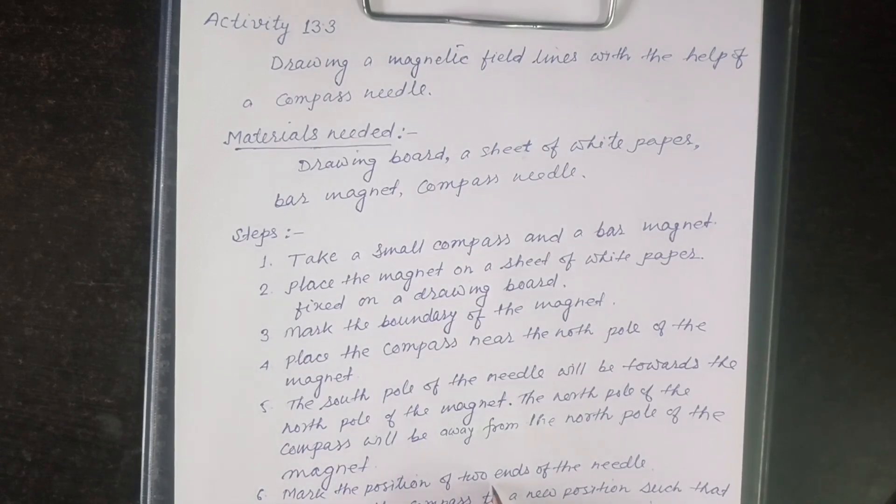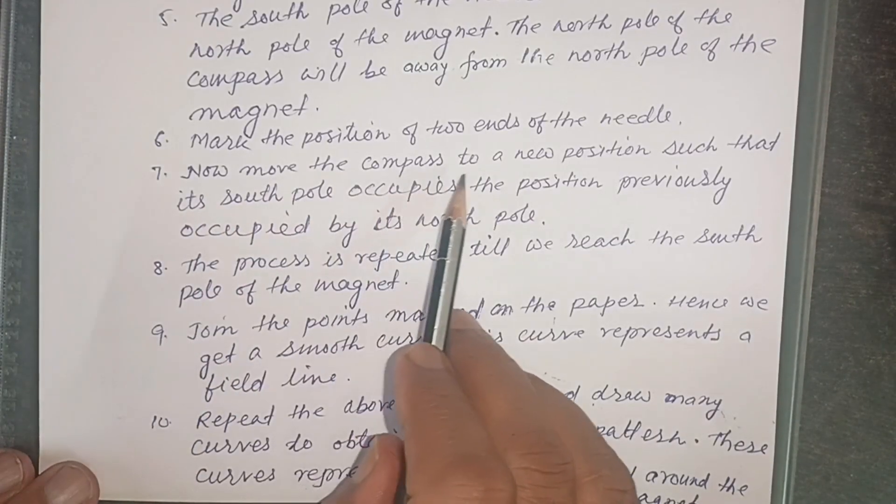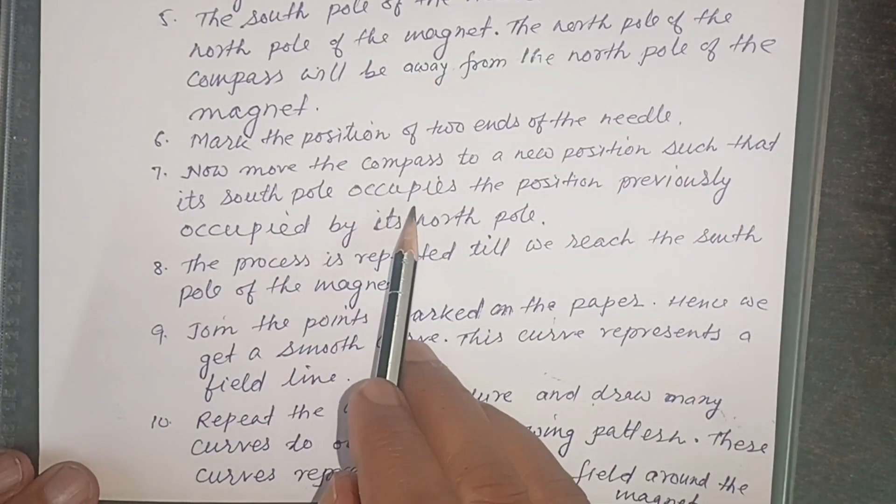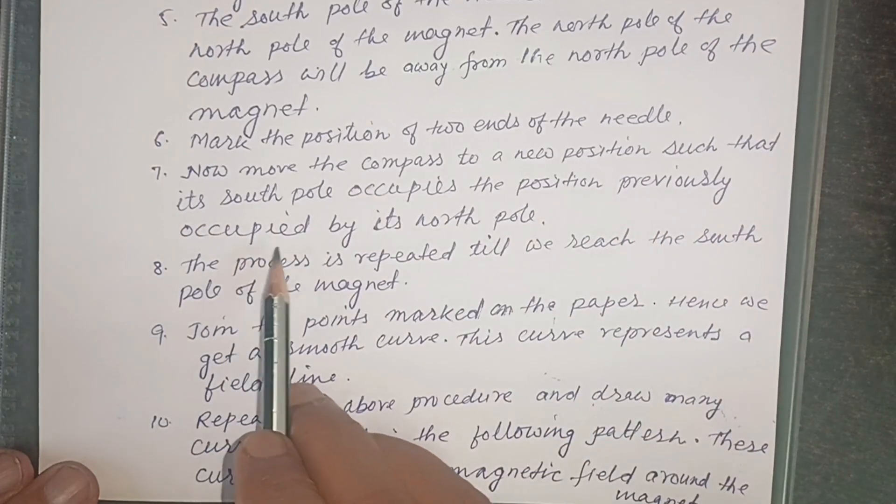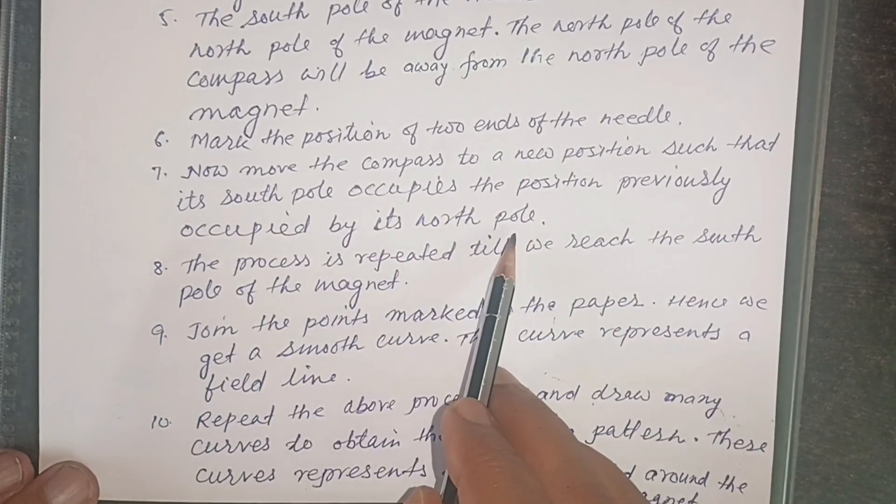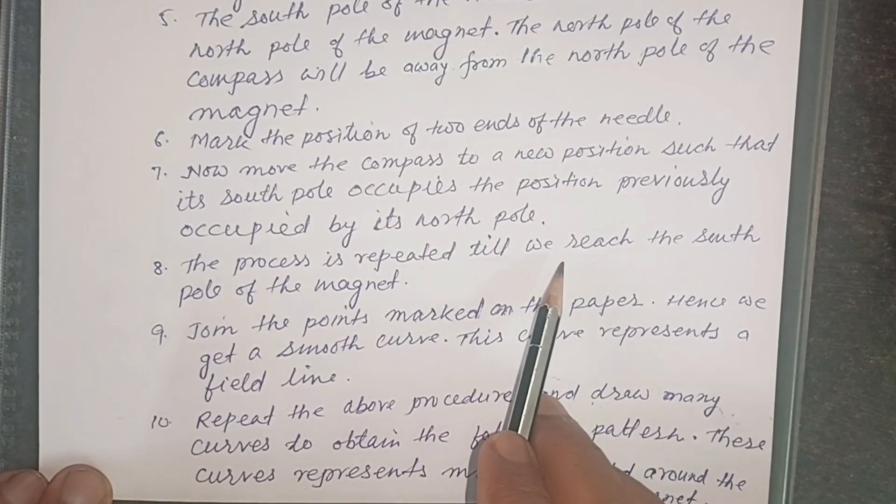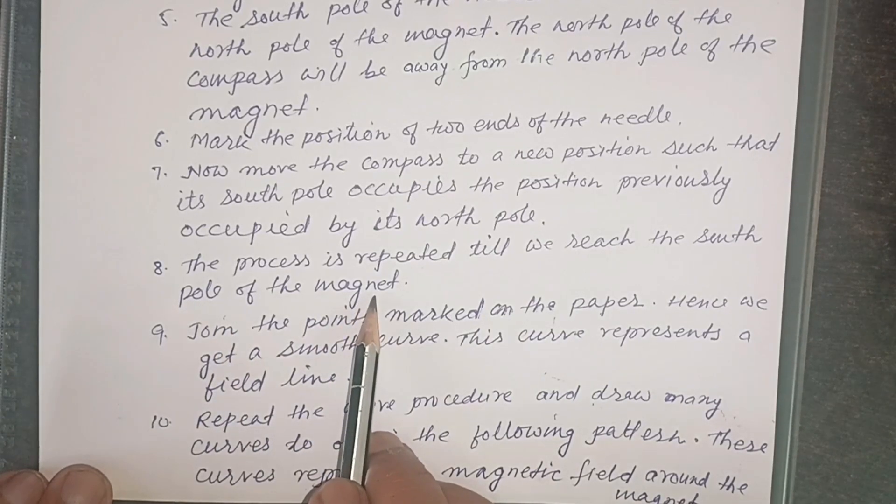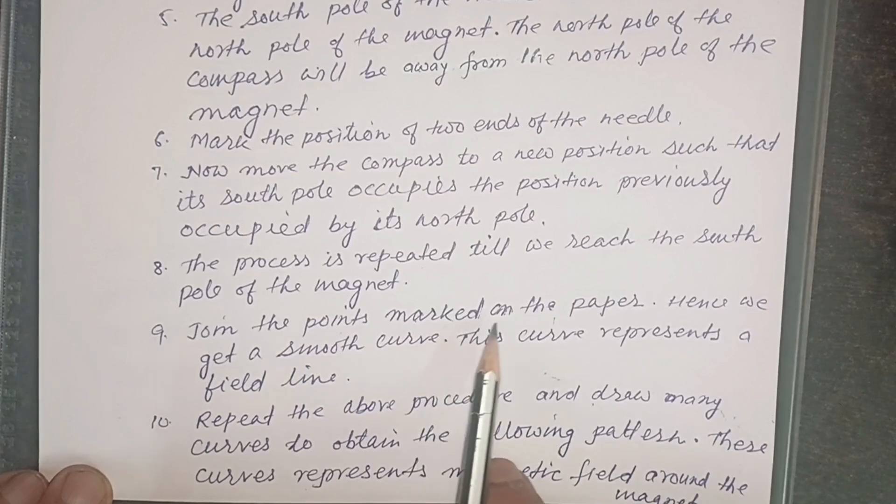Mark the position of two ends of the needle. Now move the compass to a new position such that its south pole occupies the position previously occupied by its north pole. The process is repeated till we reach the south pole of the magnet. Join the points marked on the paper.